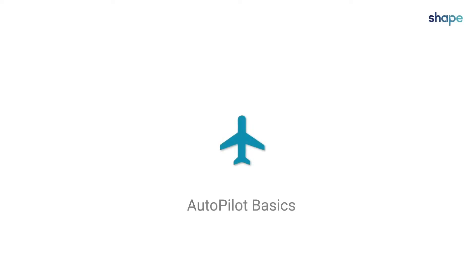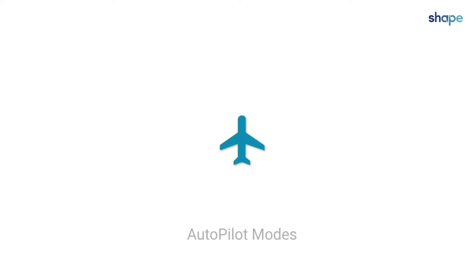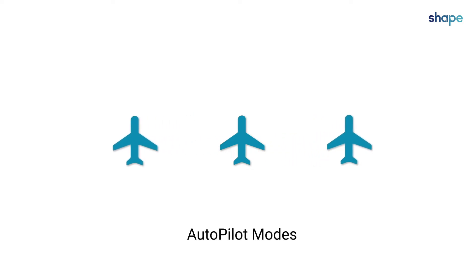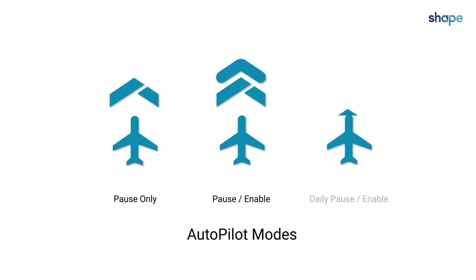This video introduces the basics of Autopilot. Autopilot can be used in three different modes: Pause Only, Pause Enable, and Daily Pause Enable. Each mode uses a unique set of rules to automatically control advertising spend.